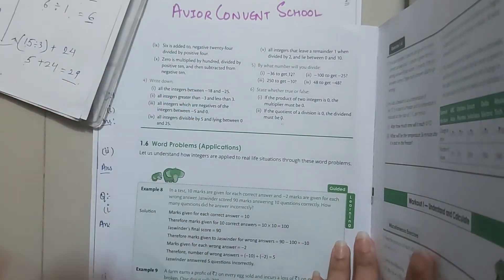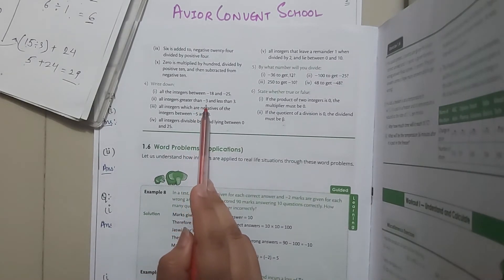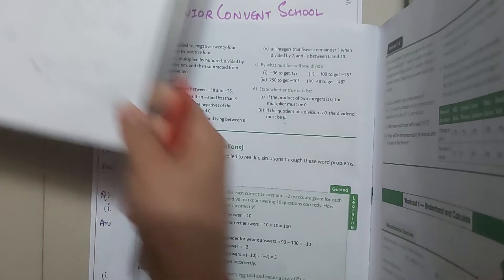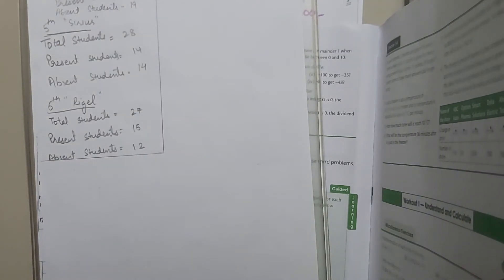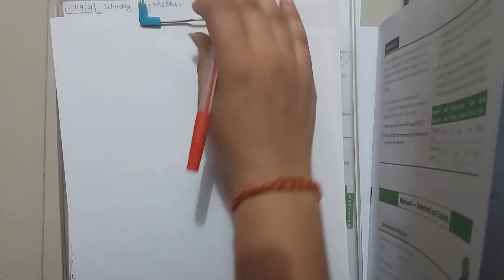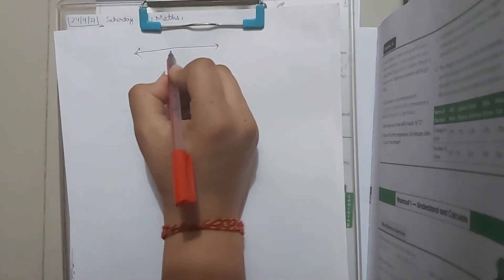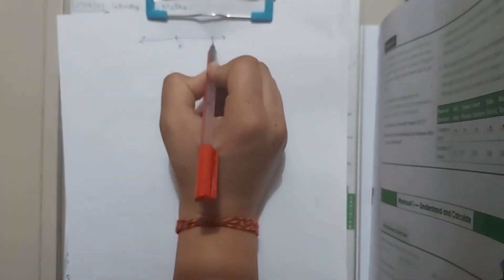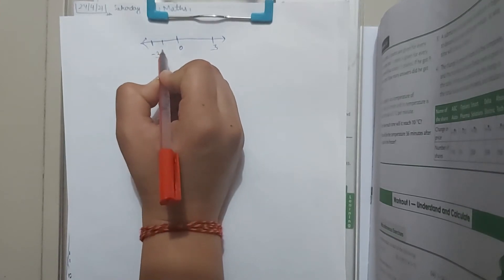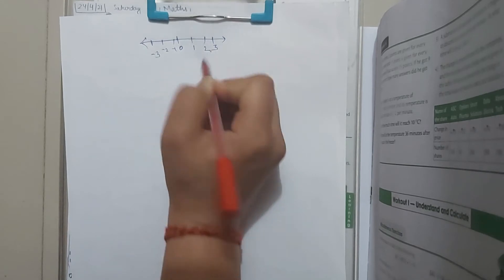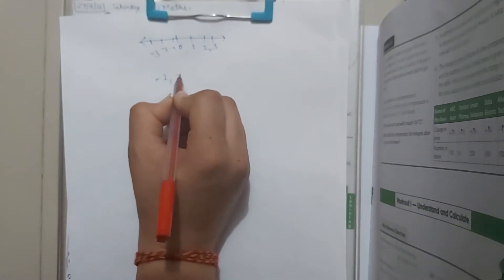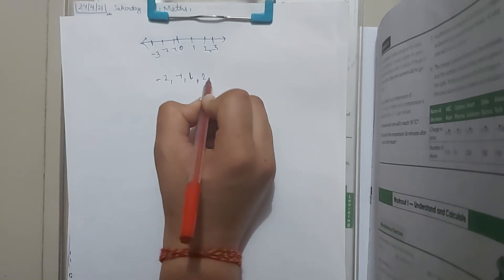Next question: all integers greater than minus 3 and less than 3. Let us draw a number line first. A number line contains all the positive and negative numbers. Here is 0; the positive value is 3 and the negative is minus 3. So the numbers in between are: minus 2, minus 1, 0 is not included, 1 and 2. Our answer is minus 2, minus 1, 1, 2.